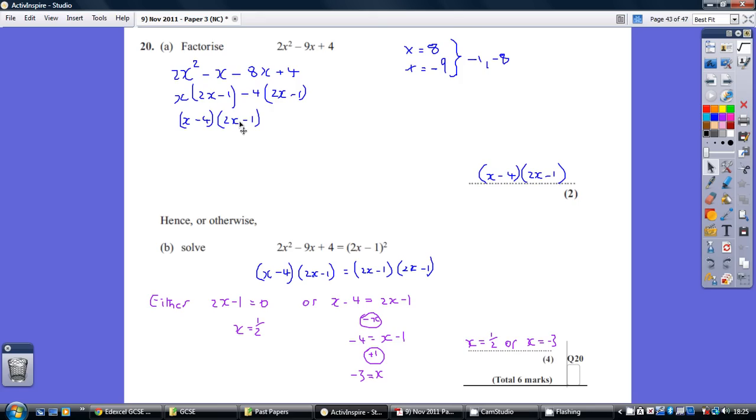Now, our final solution is then what's presently not in a bracket, so the x minus 4, and presently what's repeated in the two brackets, 2x minus 1. And you'll see, if you do FOIL on this, you end up with where we started, so that's our solution.